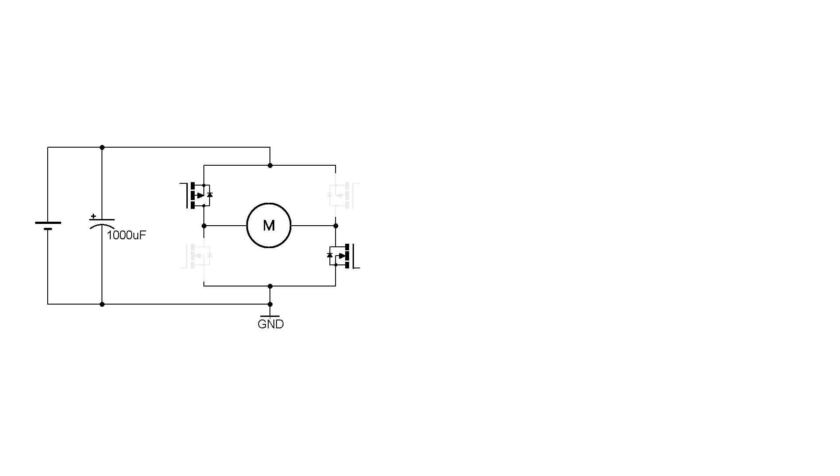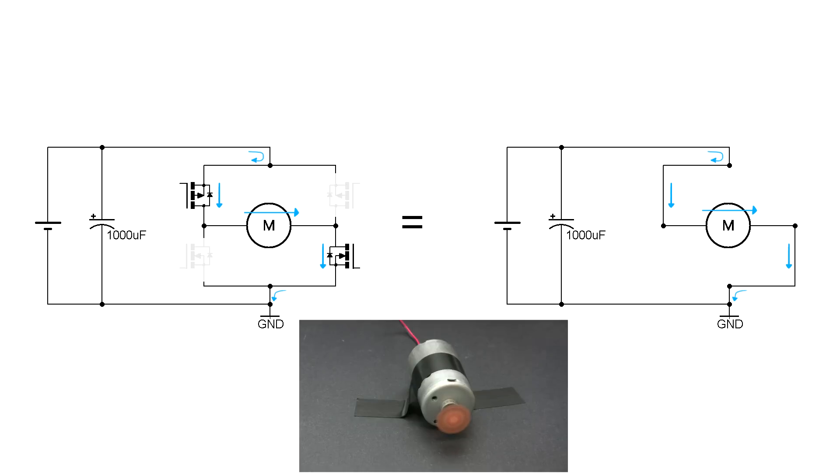If we turn these two transistors on and these two off, here's the equivalent circuit. Now current can flow from your positive power supply rail, through this transistor, through the motor, through this other transistor, down to your circuit's ground. This will make the motor spin in one direction.